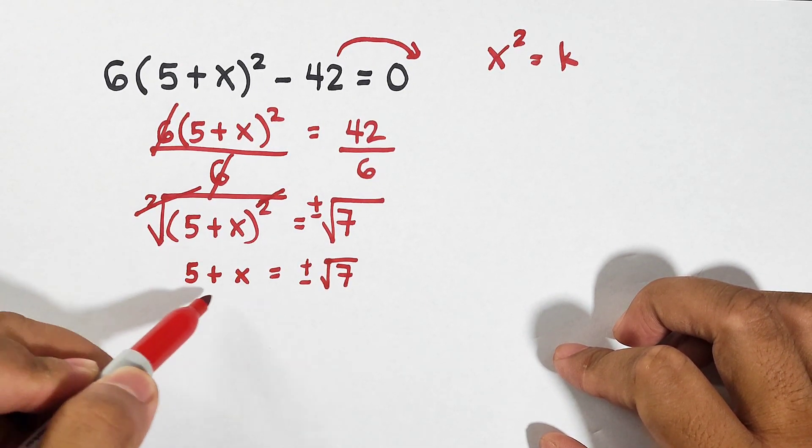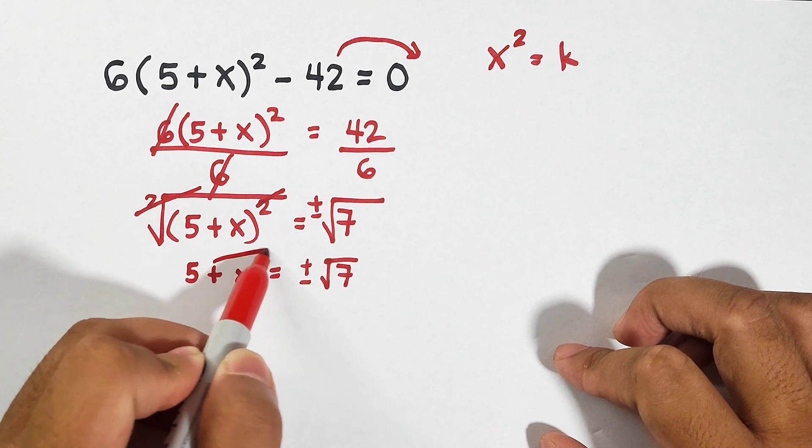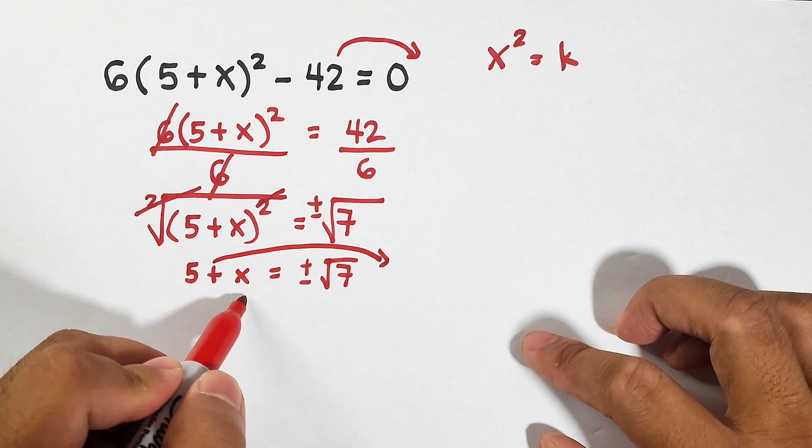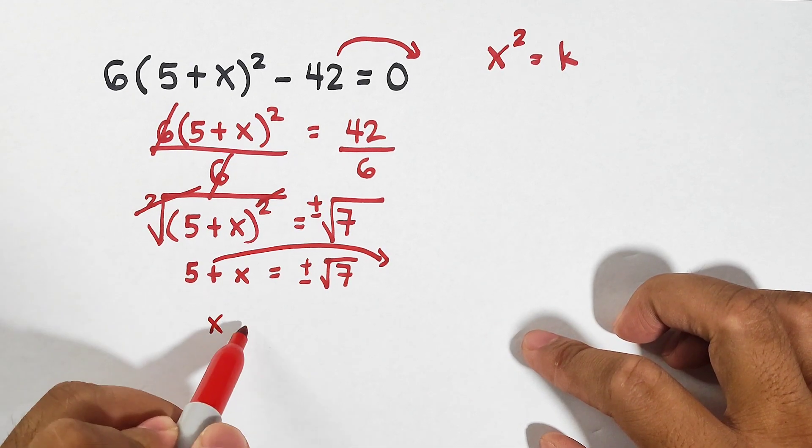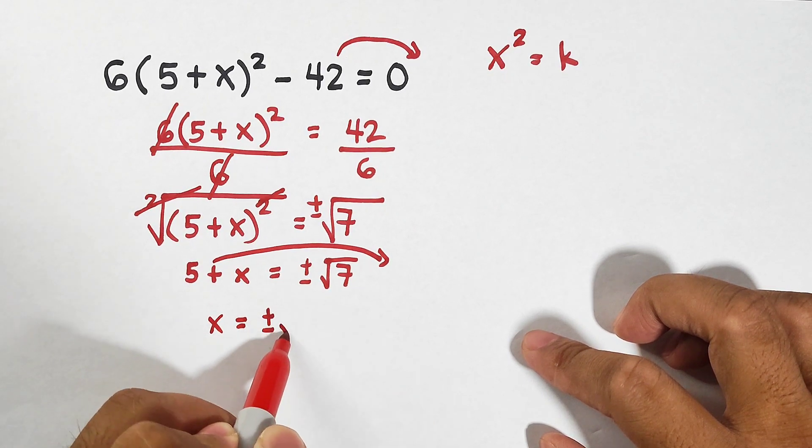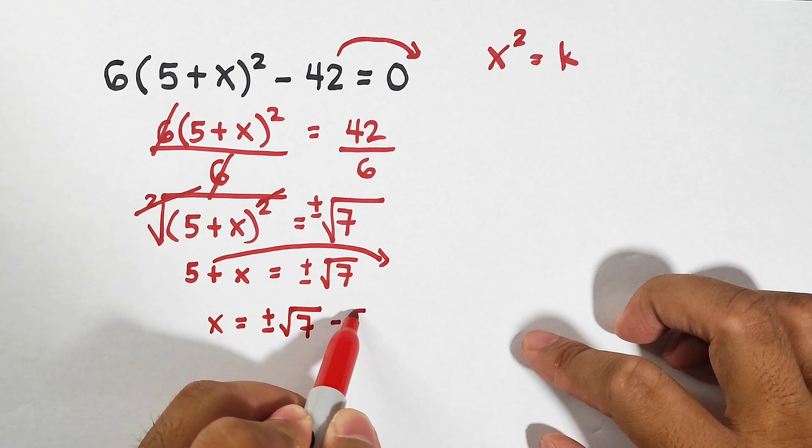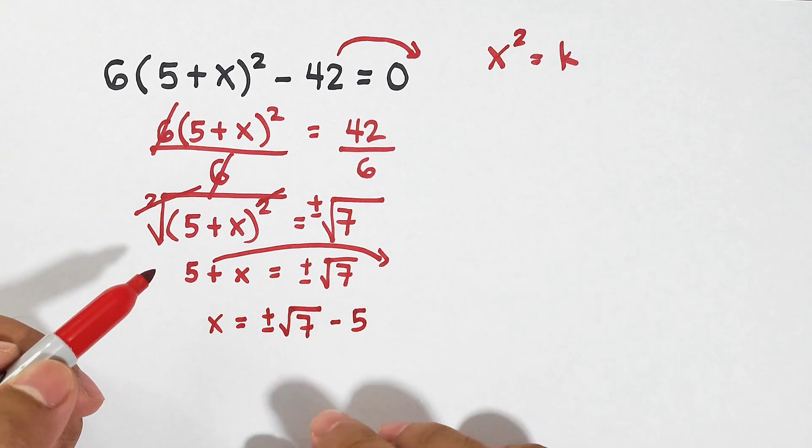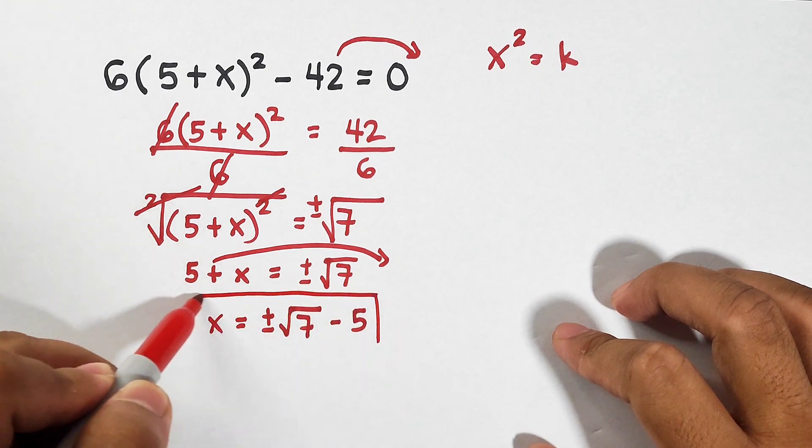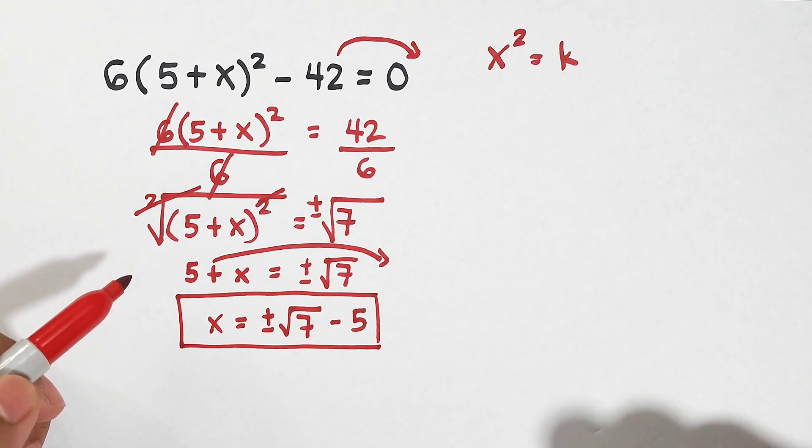What's next is we need just x, so we need to remove 5 by transposing it to the other side of the equation. So what we have now is simply x is equal to positive negative square root of 7, then it will become minus 5. Now, we can consider this one as an answer, because we cannot simplify square root of 7 and minus 5. This is acceptable.